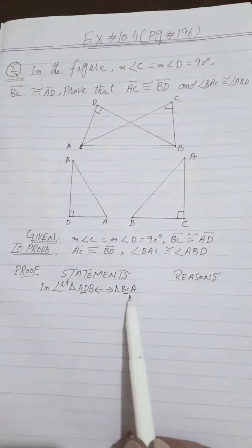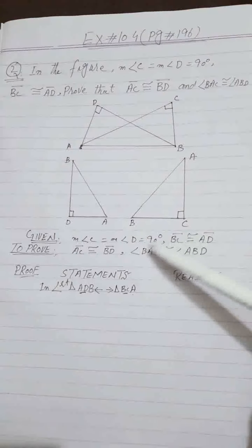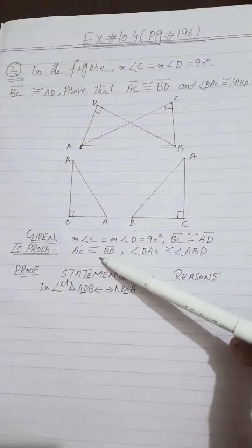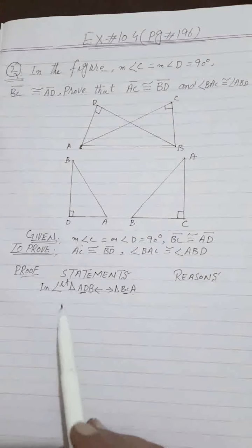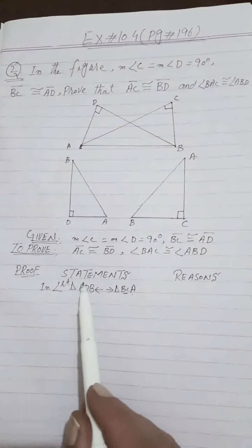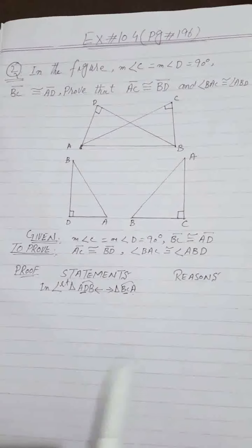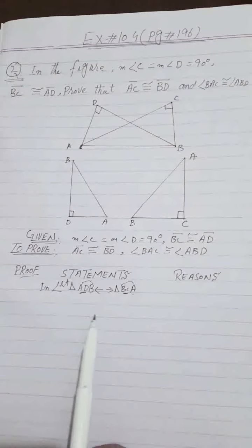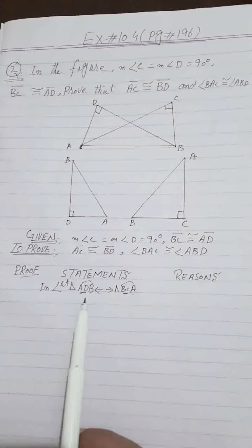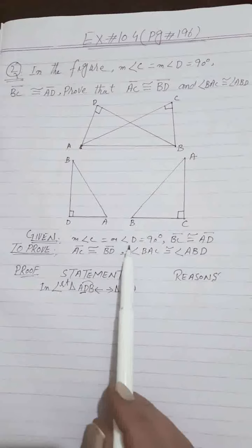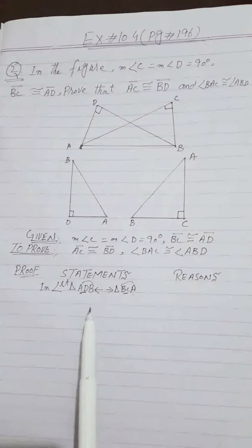The second pair is DB and CA — this is what we need to prove, so we reject it. The third side is AB and BA — these are the same line segment, so they fall under the 'common' heading. We still need an angle. Angles C and D are both 90 degrees, so they are equal. Our postulate will be complete.